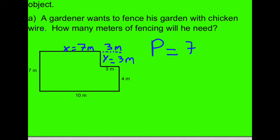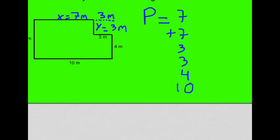plus 7, plus 3, plus another 3, plus 4, and plus 10. And I'll just double check that again. 7, 7, 3, 3, 4, 10. Now I'm going to add those up.